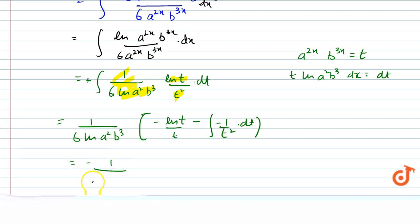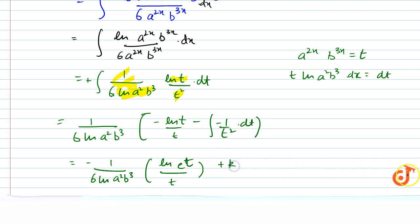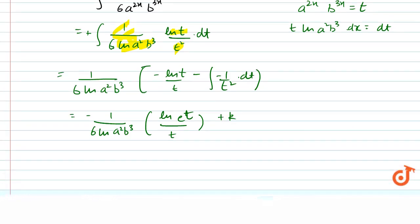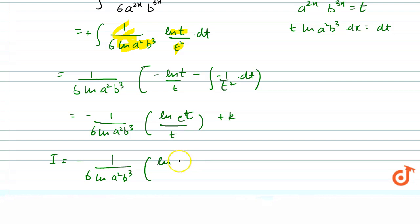Simplifying, we get minus 1/6·log(a²b³) times log(a^(2x)·b^(3x)) times e divided by a^(2x)·b^(3x), plus k. So this is our final answer.